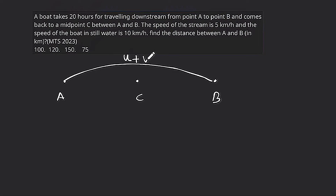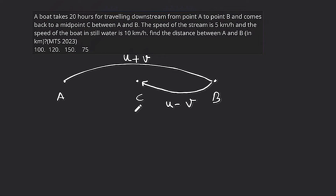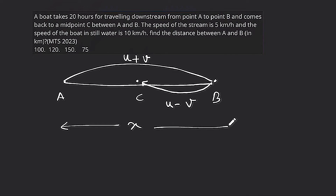Downstream speed is u plus v, where u is the speed of the boat and v is the speed of the stream. Then for the return, downstream goes to upstream. In upstream, the speed is u minus v — going from B to C, the midpoint. So upstream speed is u minus v. Here, A to B distance we know as x, and B to C (midpoint) distance is x by 2 — x downstream and x by 2 upstream.